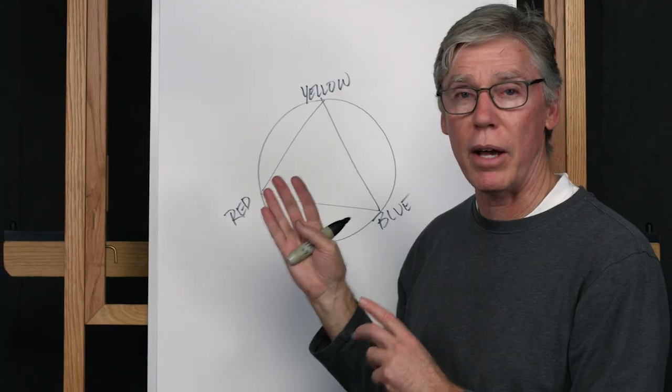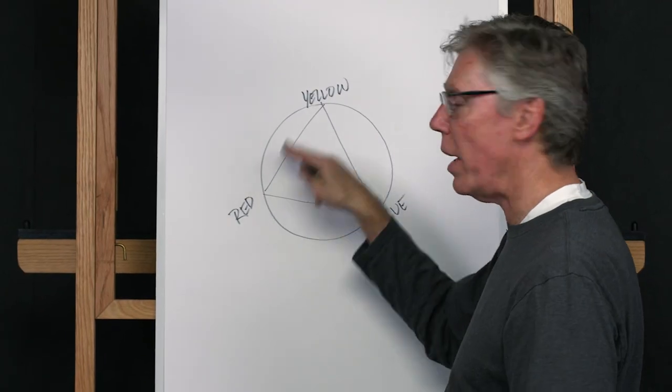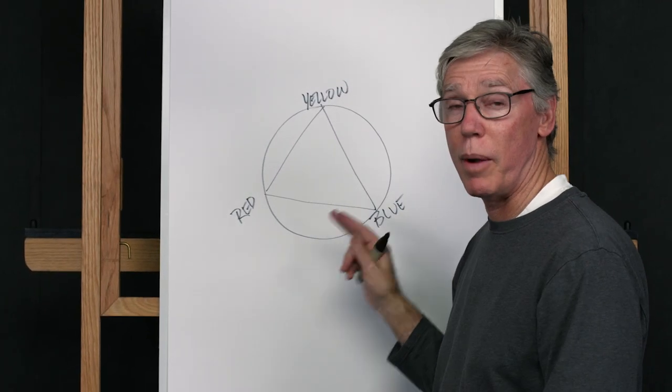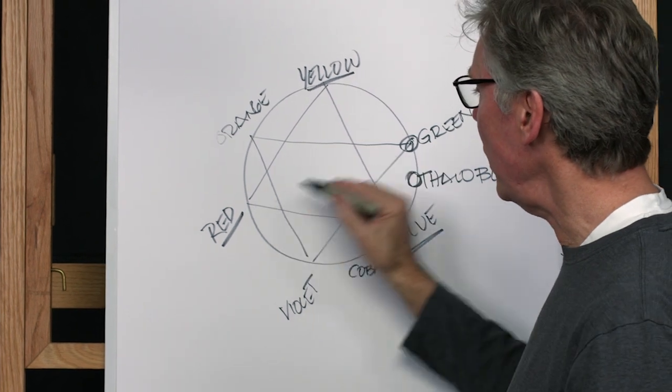Hi, my name is Bill Perkins and welcome to the last session of our Color Bootcamp. This session is on hue and what we're going to cover in this section is the different aspects of how we harmonize color with a predominant hue.